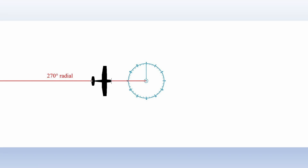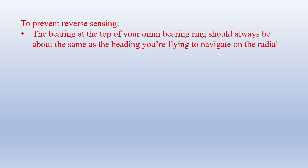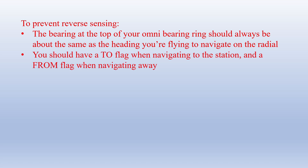If you try to fly inbound on the 270 degree radial with 270 dialed into your Omni Bearing Ring, you'll get reverse sensing — the CDI will indicate the opposite of where you are in relation to the course. If you turn left to center the CDI, the needle will actually move farther away. To prevent reverse sensing: the bearing at the top of your Omni Bearing Ring should always be approximately the same as the heading you're flying. If it's opposite to your direction of travel, you'll get reverse sensing. You also want a TO flag when flying toward a station and a FROM flag when navigating away from it.